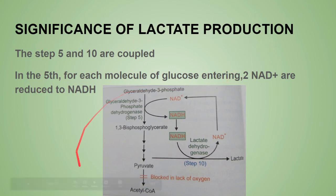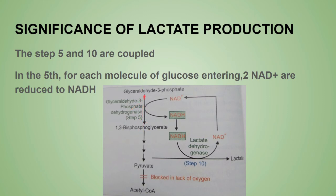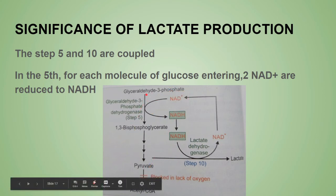Regarding the significance of lactic acid production: steps 5 and 10 are coupled. In step 5, NAD⁺ is converted to NADH. However, NAD⁺ is a coenzyme present in limited amounts in the body. Step 5 is therefore the bottleneck step — if NAD⁺ is insufficient, the reaction cannot proceed. For smooth operation, NADH must be reconverted to NAD⁺ to allow the pathway to continue.